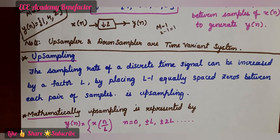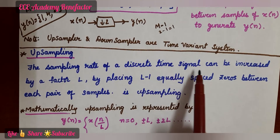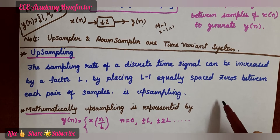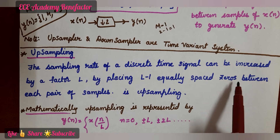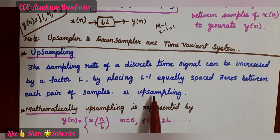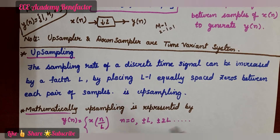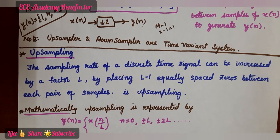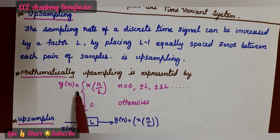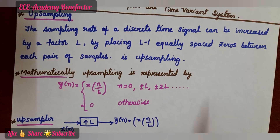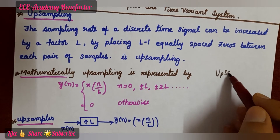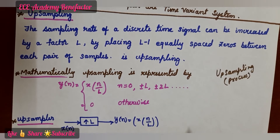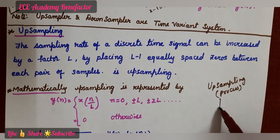Next, coming to upsampling. What is upsampling? When the sampling rate of a discrete time signal is increased by a factor L — how it can be increased? By placing L minus 1 equally spaced zeros between each pair of samples. So upsampling is a process where the sampling rate of a discrete time signal is increased by a factor L. This is done by the upsampler.